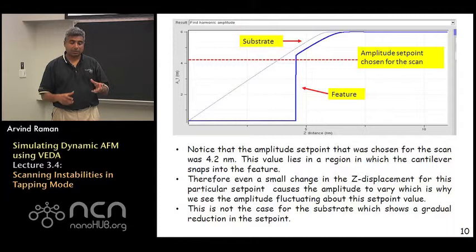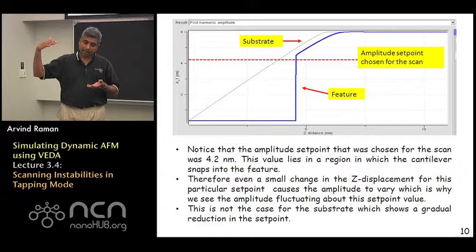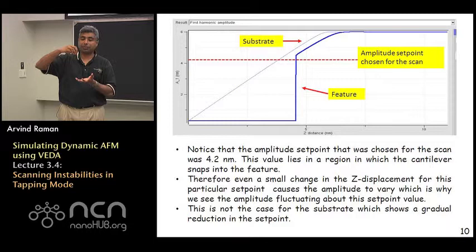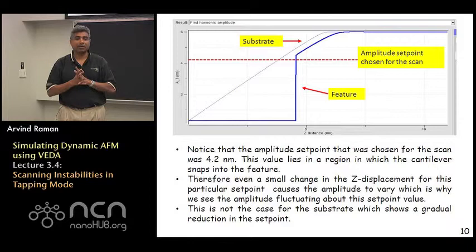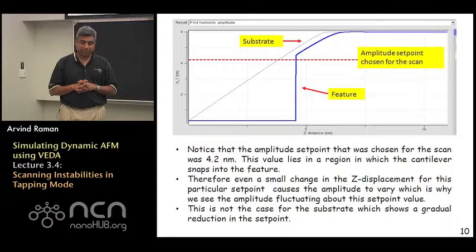Why this happens is basically related to an effect which we have studied in the context of static force distance curves that if the cantilever is brought very close to the sample and if the attractive forces are very large, remember the tip especially for soft cantilevers is going to snap into the sample. This can actually start happening even in dynamic AFM when you are dealing with very sticky samples and soft cantilevers.